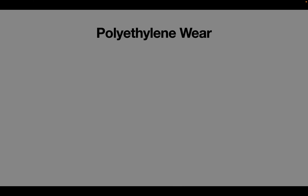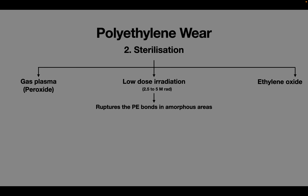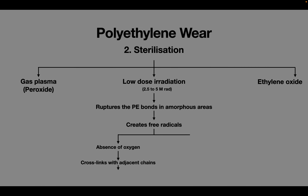Let's see how polyethylene sterilization methods affect its wear characteristics. Polyethylene can be sterilized by low-dose irradiation, gas plasma using hydrogen peroxide, or ethylene oxide. When the polyethylene is gamma irradiated with 2.5 to 5 Mrad of radiation, it ruptures the polyethylene bonds in the amorphous areas and creates free radicals. In the absence of oxygen, these free radicals create cross-links with adjacent chains and hence have better wear properties. In the presence of oxygen, the free radicals do not cross-link but lead to degradation of the polyethylene chains, which is termed chain scission, resulting in poor wear properties.